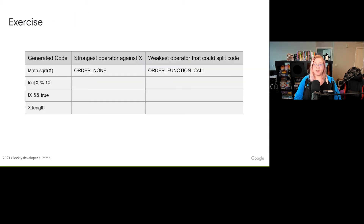We covered a fairly simple example with the math blocks, so I'd like to cover a few other examples to enhance understanding. In this table, the first column represents the generated code of a value block that has a single input represented as x. The second column lists the strongest operator which might split x, and would correspond to the order you would be passing to the value-to-code call. The third column lists the weakest operator that could split the generated code, and would be the order included in the block generator's return.